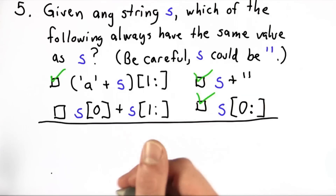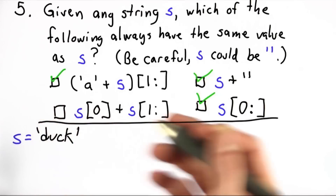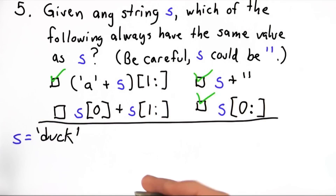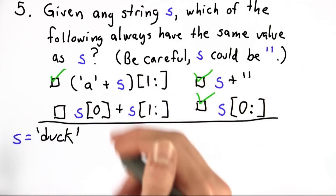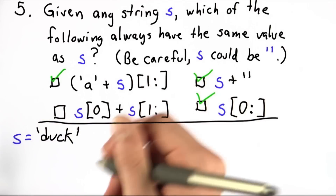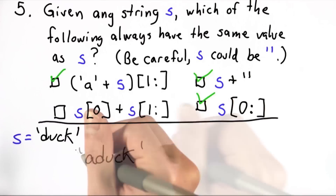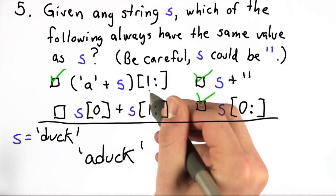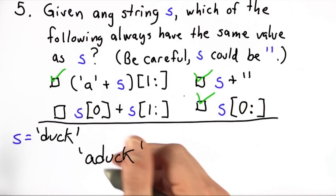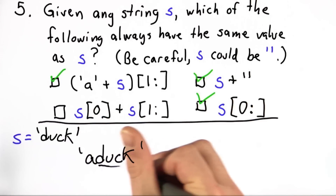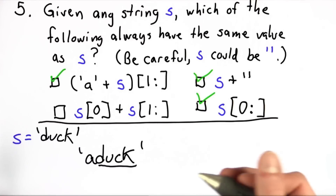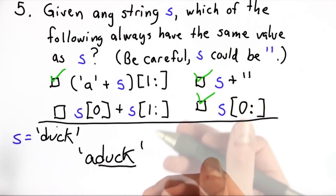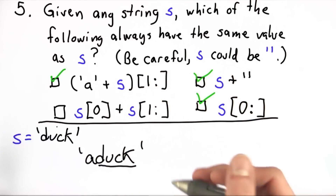Let's pick an example string s. Let's say s is 'duck'. In the first example, we can calculate a with s. So taking index 1 onwards is going to give us back 'duck', which is our original string s. This works.